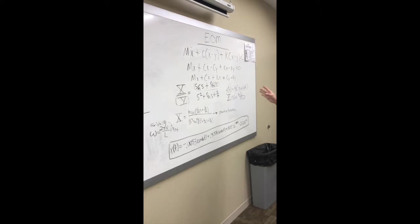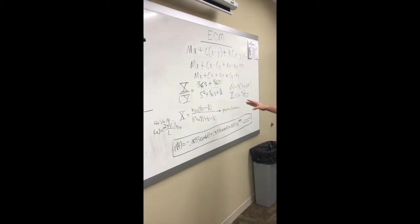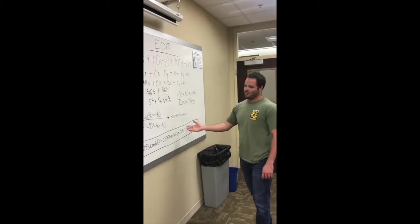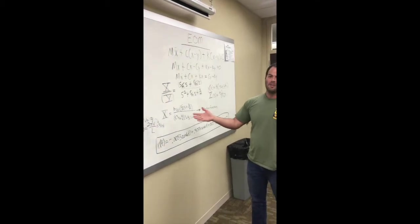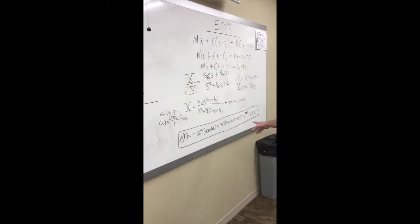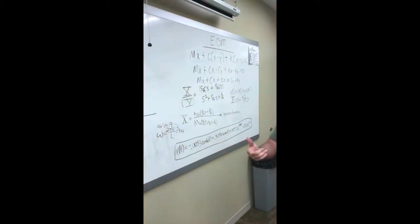After we got the transfer function, we broke it down into partial fractions, which led to the analytical solution. For that, we used v equals 1 meter per second. After we got the analytical solution, we put it in MATLAB.